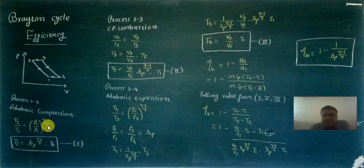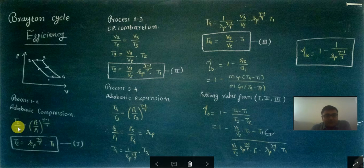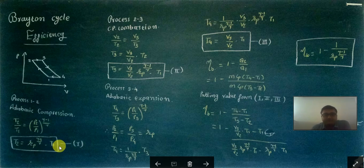So T2 equals Rp raised to gamma-1 upon gamma, multiplied by T1. This is our first equation.